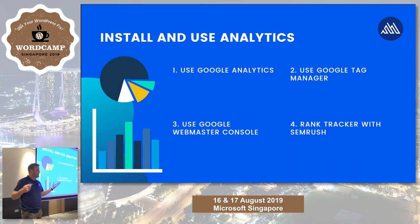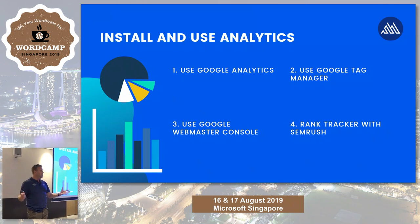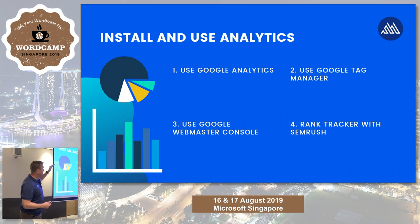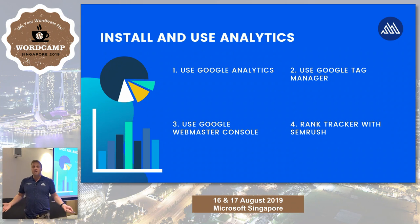Use Google Tag Manager — it's got a real purpose. I don't recommend plugins for tracking; you should know how this works because tracking is important. Use Google Webmaster Console — don't just submit your sitemap, actually open it up and look at the information it's giving you. Finally, I use the rank tracker with SEMrush once you've done steps one, two and three. A rank tracker tells you where you're ranking against your competition for certain keywords — what you don't track, you don't know.